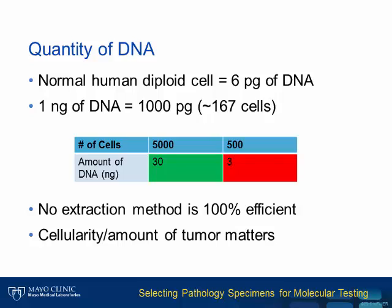Keep in mind that no extraction method is 100% efficient. Cellularity and amount of tumor are not a perfect predictor of how much nucleic acid an extraction will yield, or the quality of extracted DNA, as there are other factors involved. But given some biological limits, it is a useful and important metric.